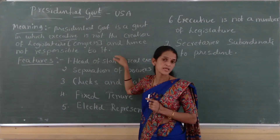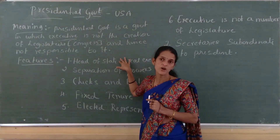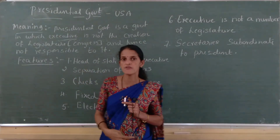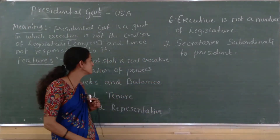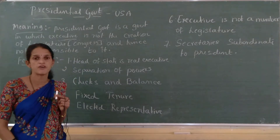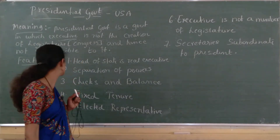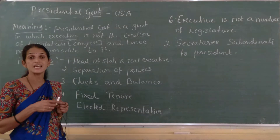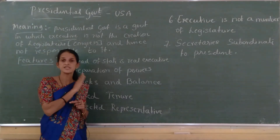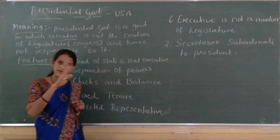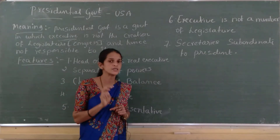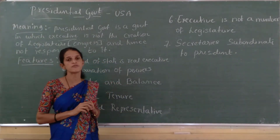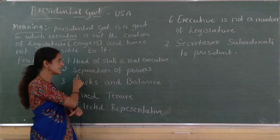This is the meaning of presidential form of government. Now, the features of presidential form of government. The first feature is that the head of state is the real executive. In parliamentary form of government there are two executives, but in presidential form of government there is only one executive — the real executive.